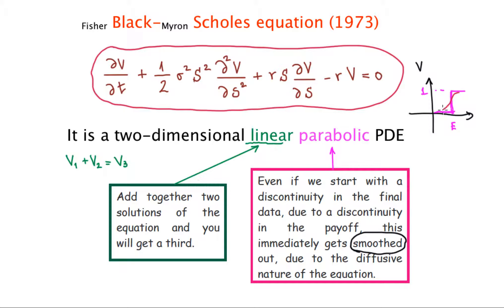This is similar to what happens in the diffusion equation for a wire where half has one temperature and the other half has another, giving a sharp discontinuity in the middle. Over time that difference gets smooth: the cooler areas get warmer and the warm areas get cooler, with the differences getting smaller over time due to the parabolicity of the PDE.